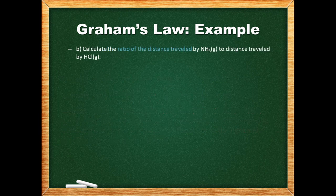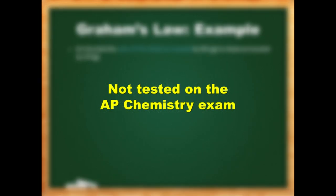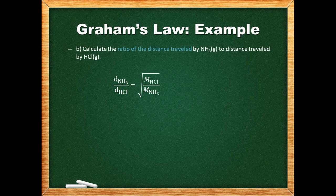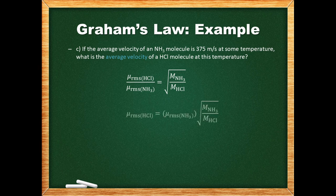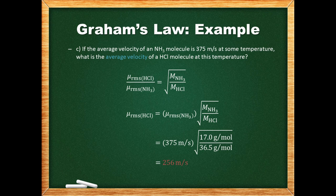Let's determine the ratio of the distances traveled by the two gases. Note that the use of Graham's Law is not tested on the AP Chemistry exam. The ratio of distances traveled is inversely proportional to the square root of the ratio of the masses — the same as the ratio of the RMS velocities. Here we're given the average velocity of an ammonia molecule and asked to calculate the average velocity of a hydrogen chloride molecule. Rearranging the equation and plugging in values, we solve for the average velocity of a hydrogen chloride molecule.